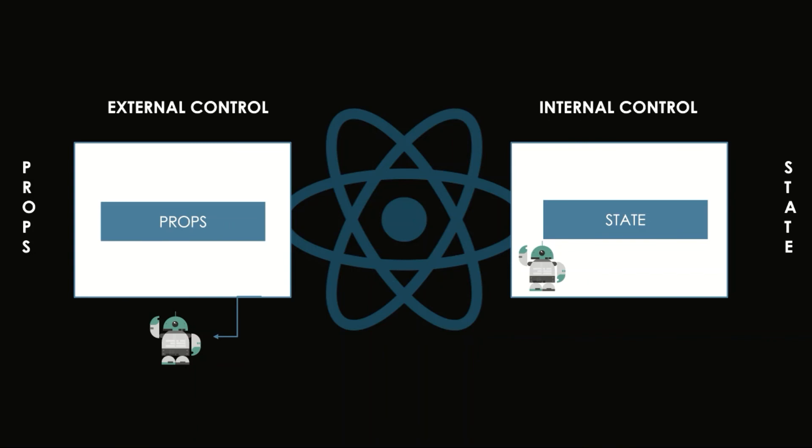And the last difference is props are external to a component. Its control lies outside the component since they come from a parent component. Components have full control over their state since it is internal to the component.